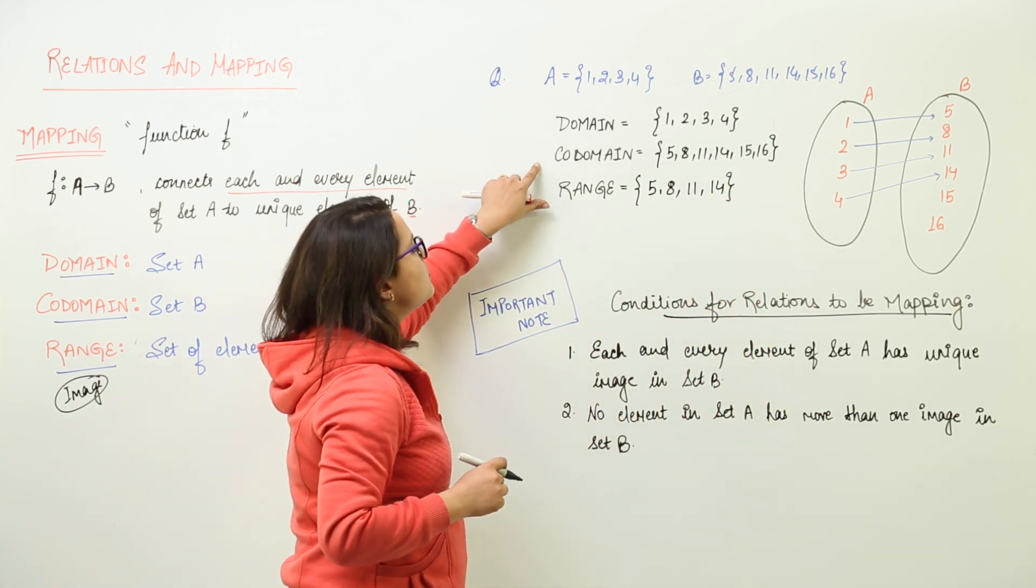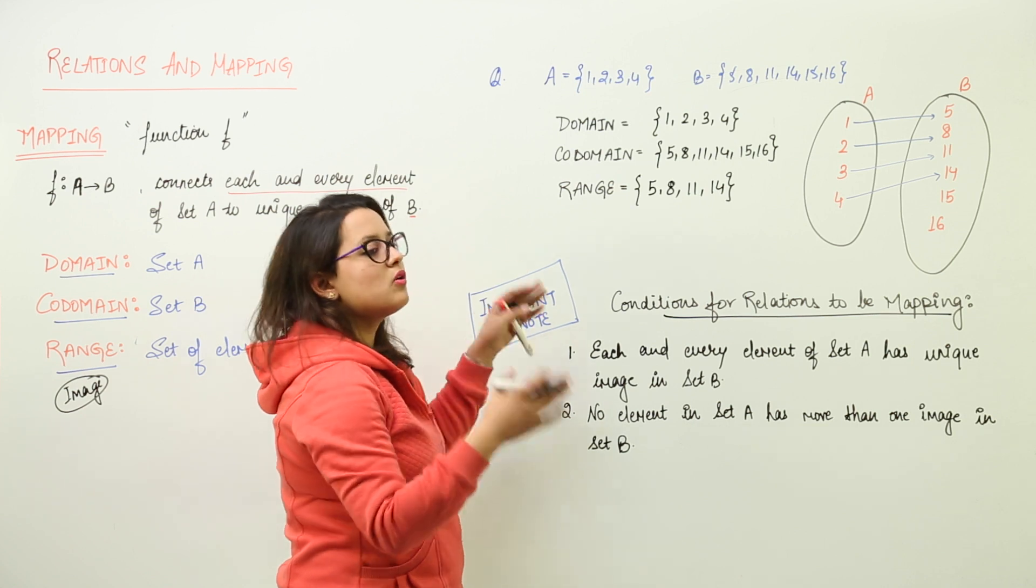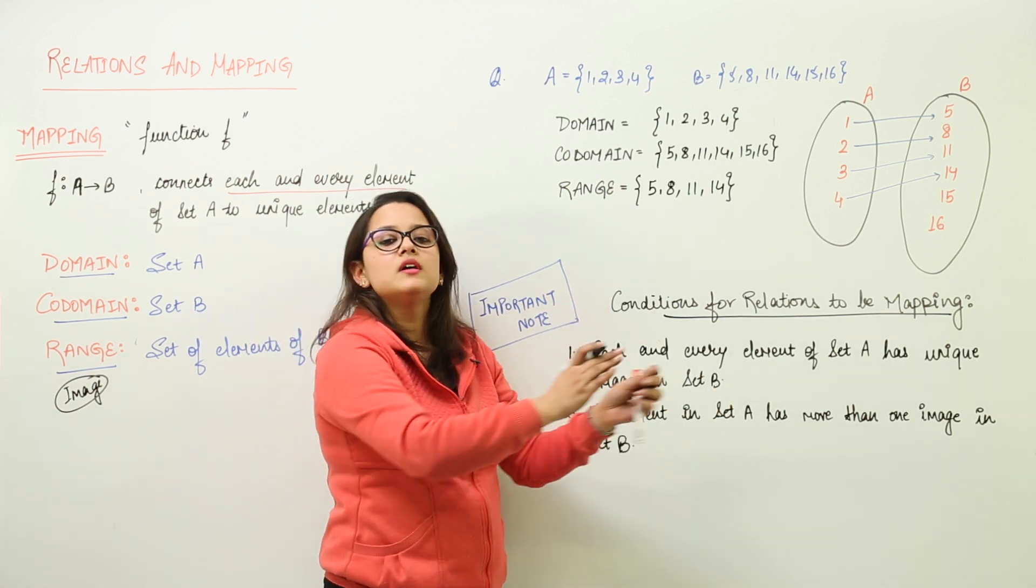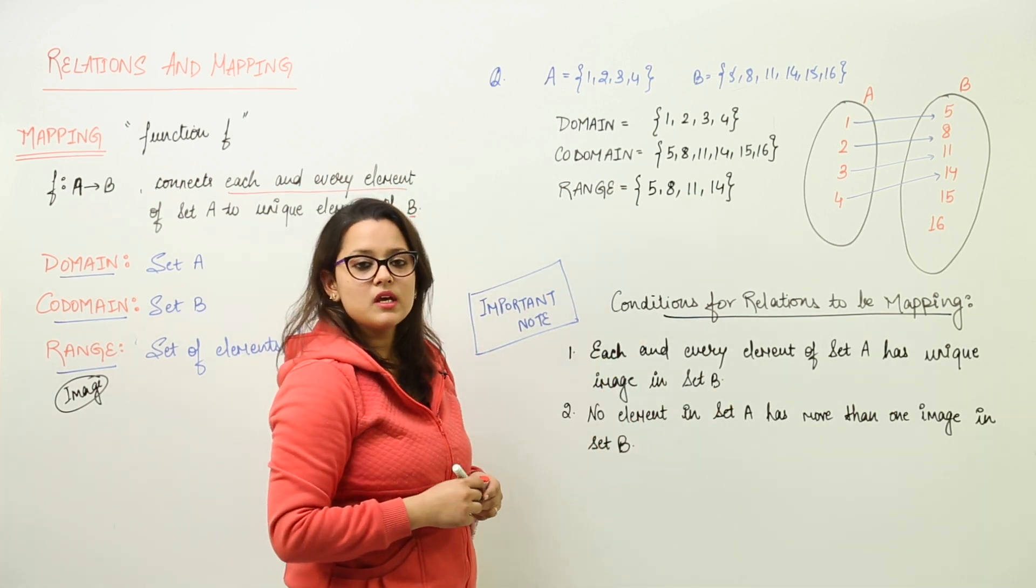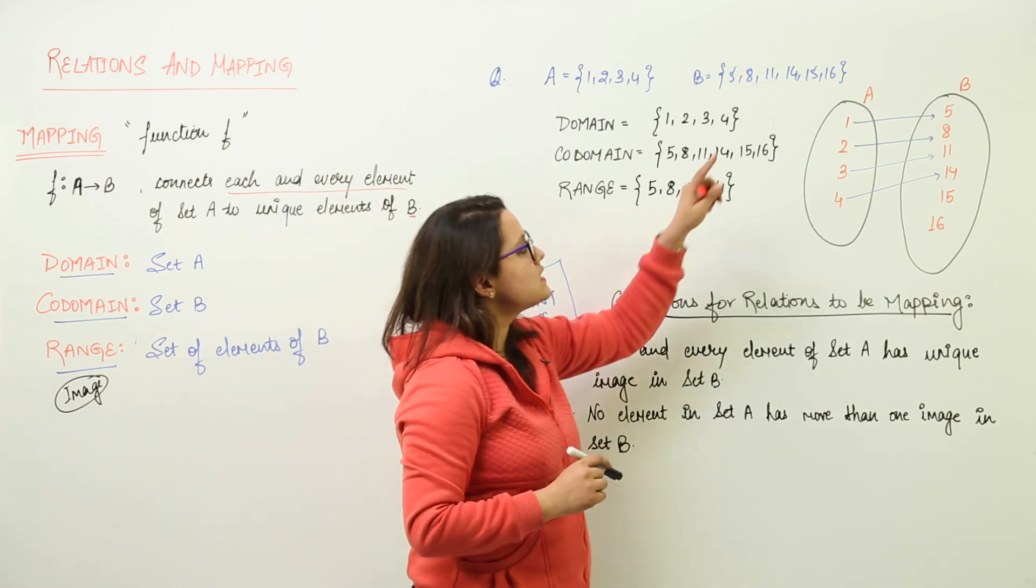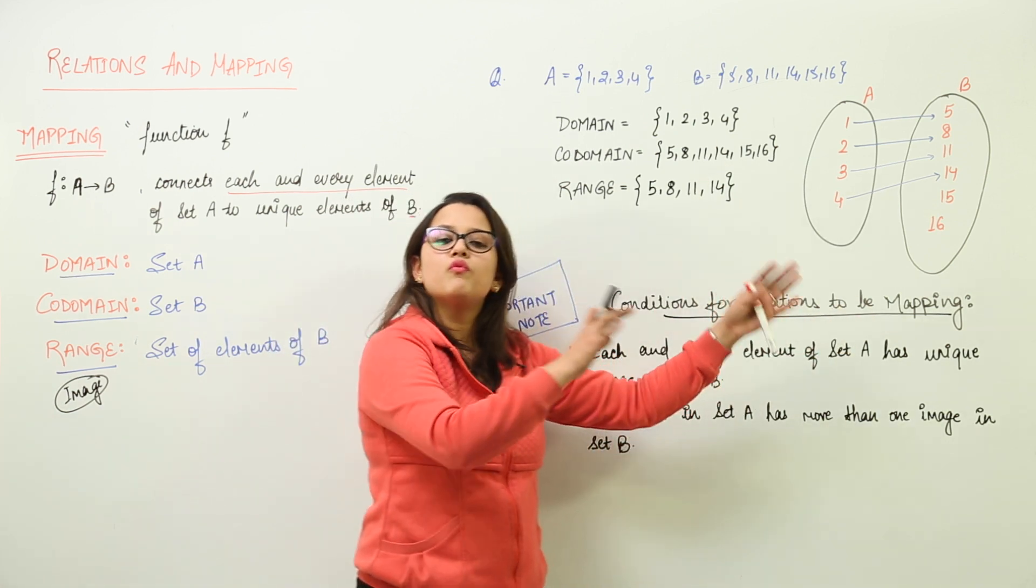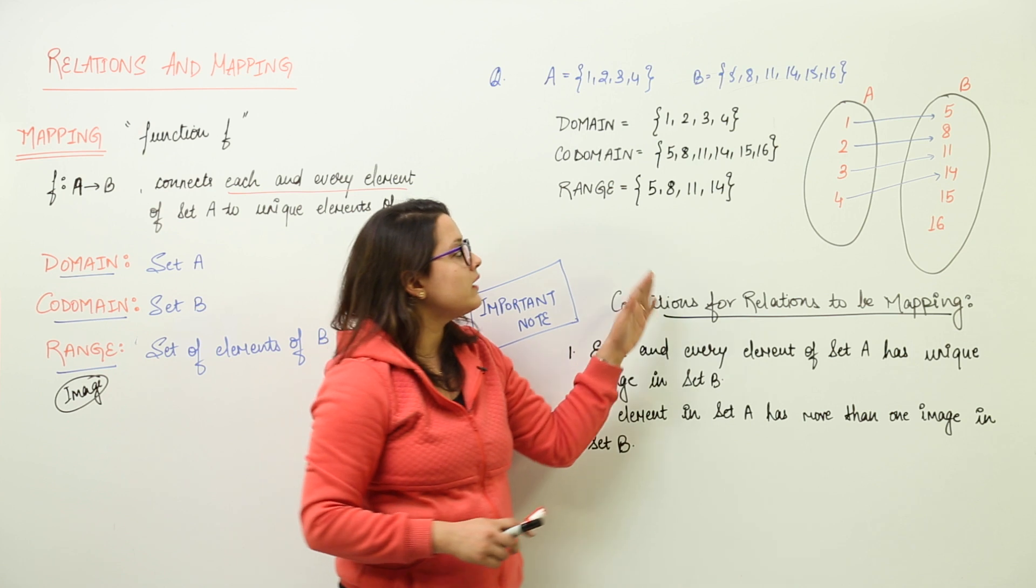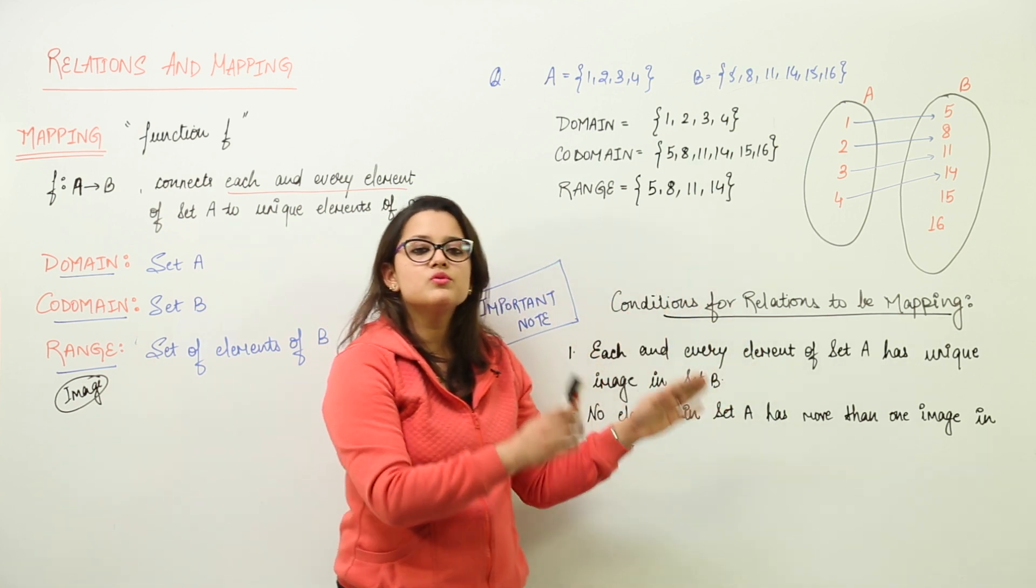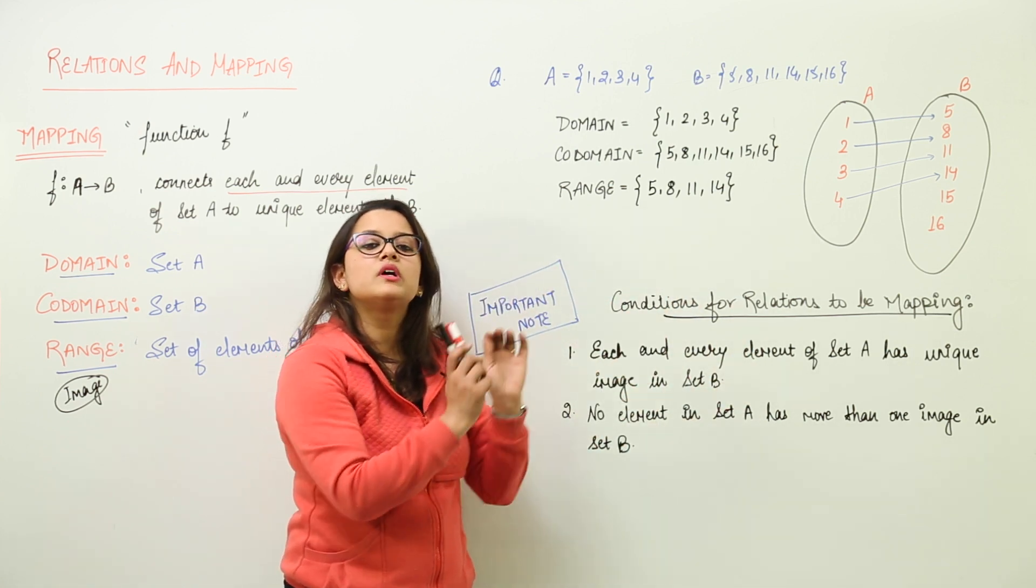That is the difference between range and co-domain. Domain are all the values from which you are making the connections or making the function. Co-domain is set of all the values to which you are connecting. And range is the values in set B to which you have connected.